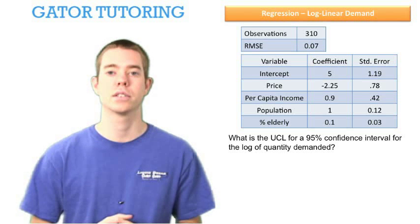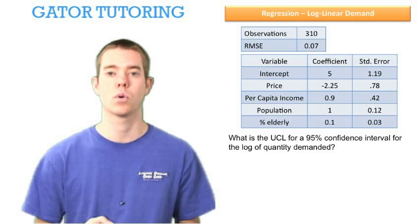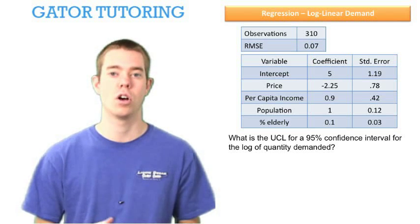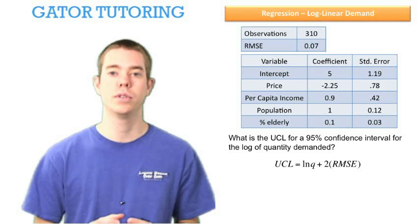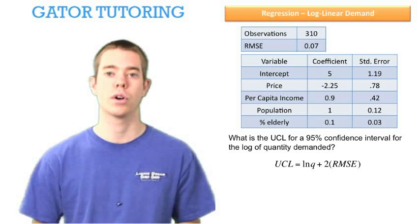The next question to ask is what is the upper control limit for a 95% confidence interval for the log of quantity demanded? Well, we just solved for the log of quantity demanded. We know that an upper control limit is equal to that number plus 2 times the root mean squared error.